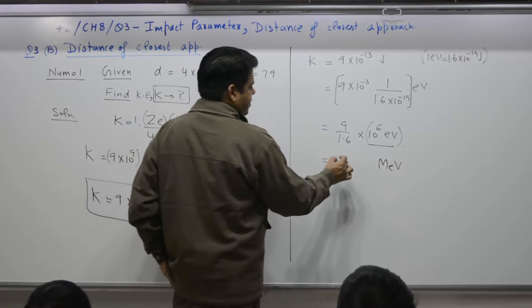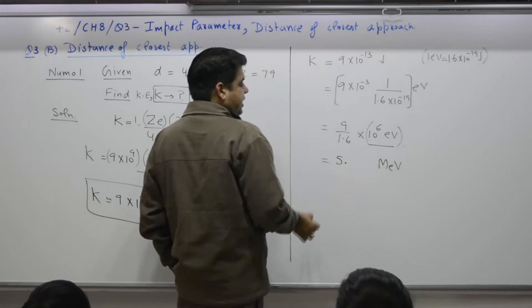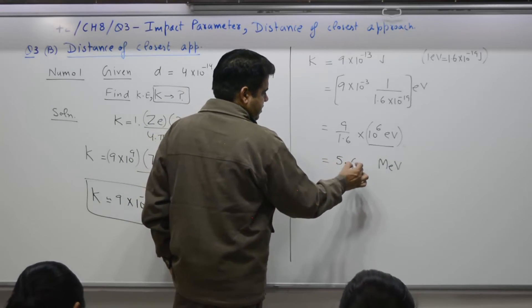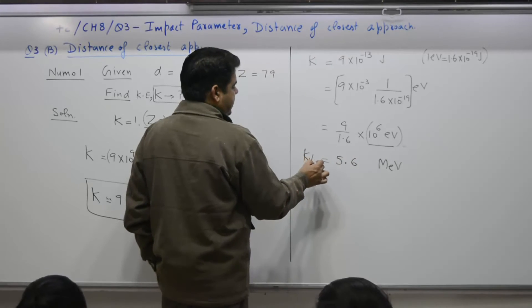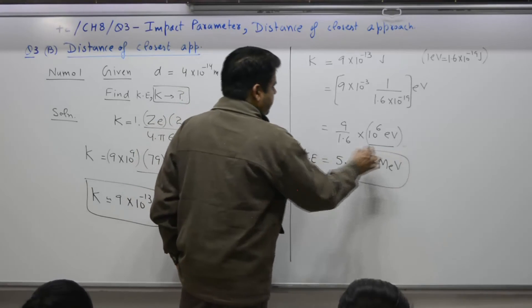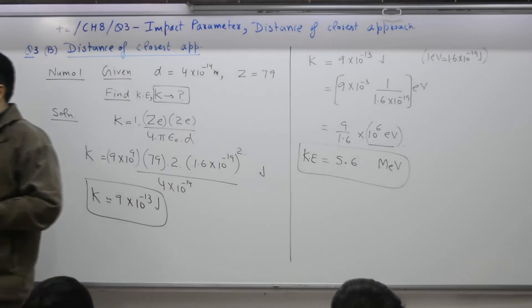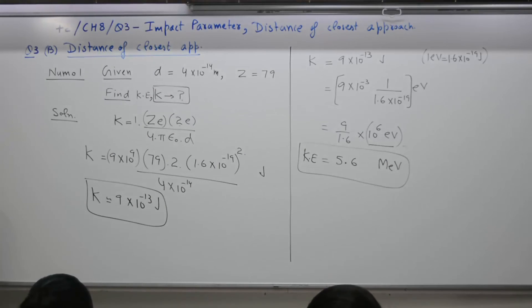It comes out to what? 5.6. So kinetic energy is equal to approximately 5.6 mega electron volt.